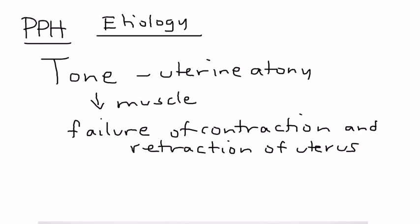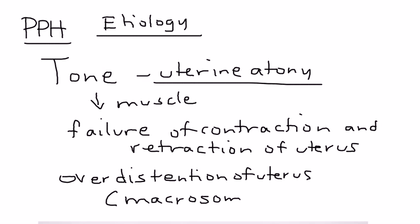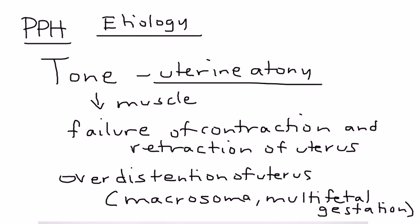Most commonly, uterine atony is the consequence of over-distension of the uterus. The reasons include fetal macrosomia - a very large baby - and multifetal gestation such as twins or triplets. This is by far the most common reason a woman can develop postpartum hemorrhage.